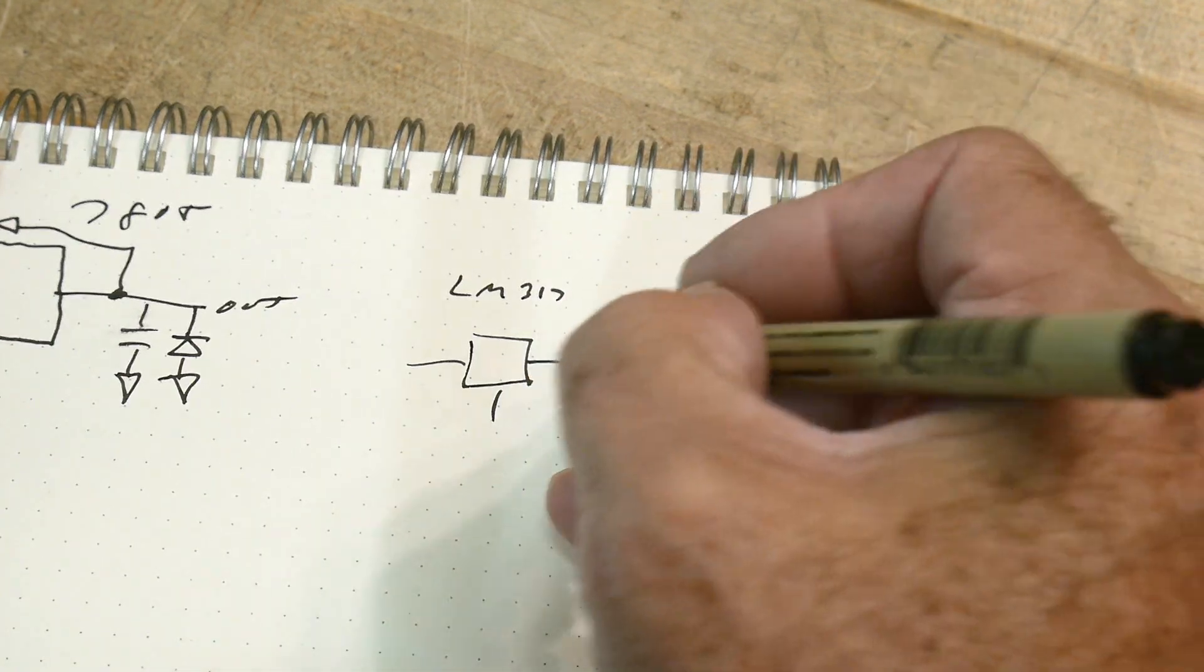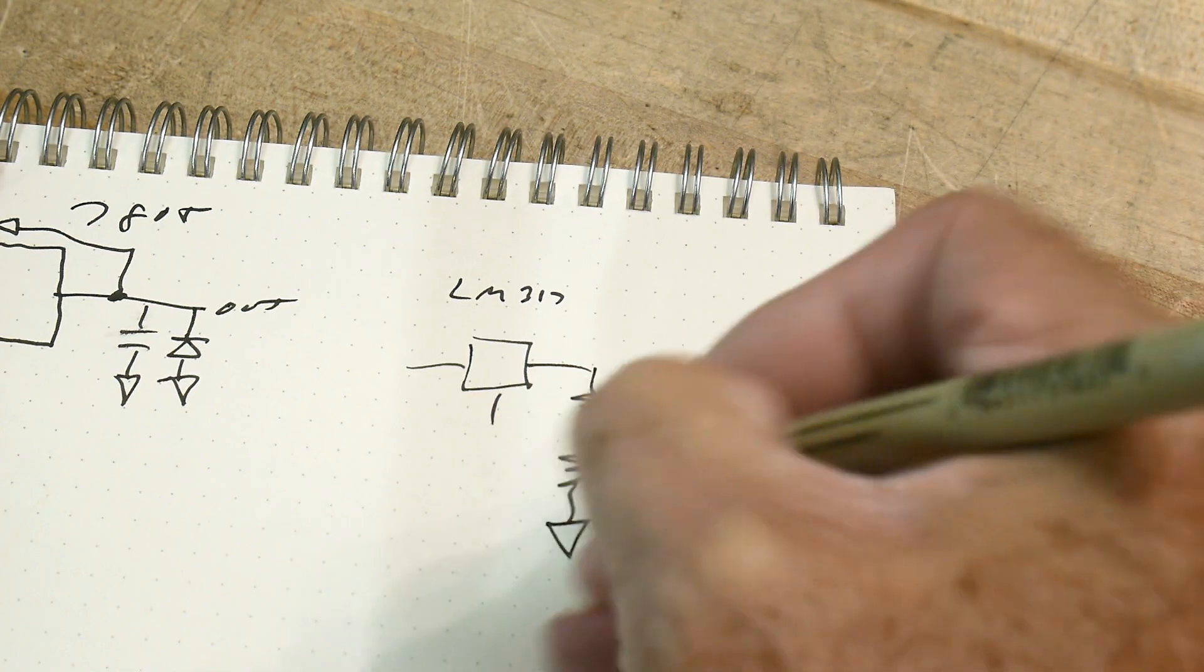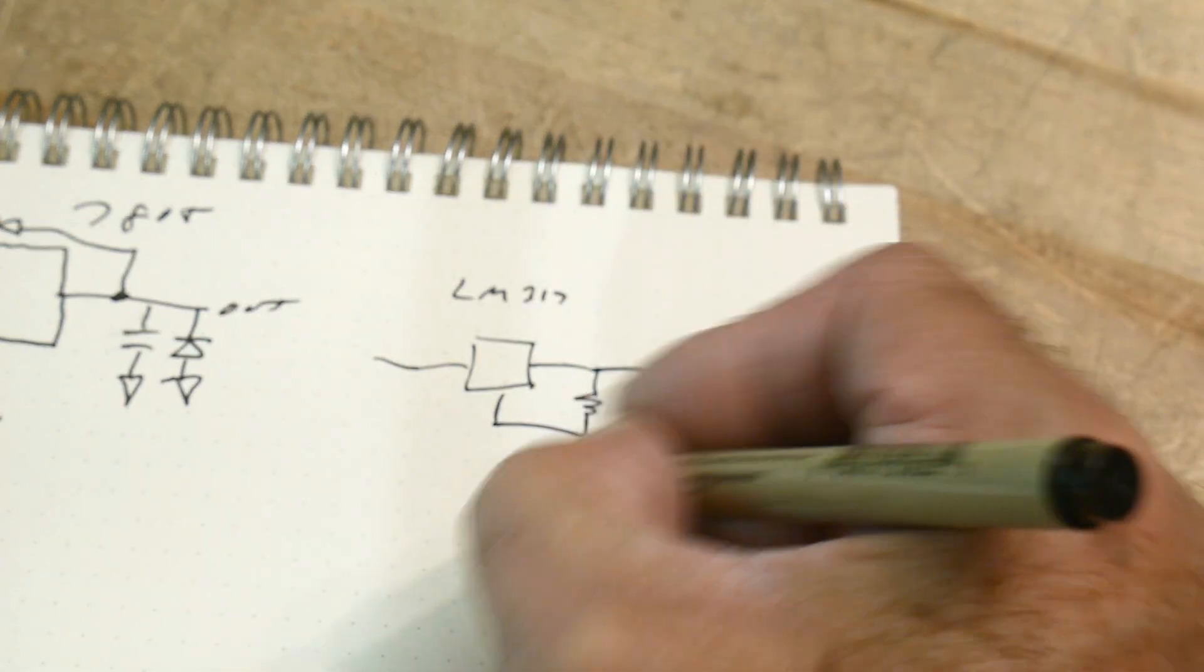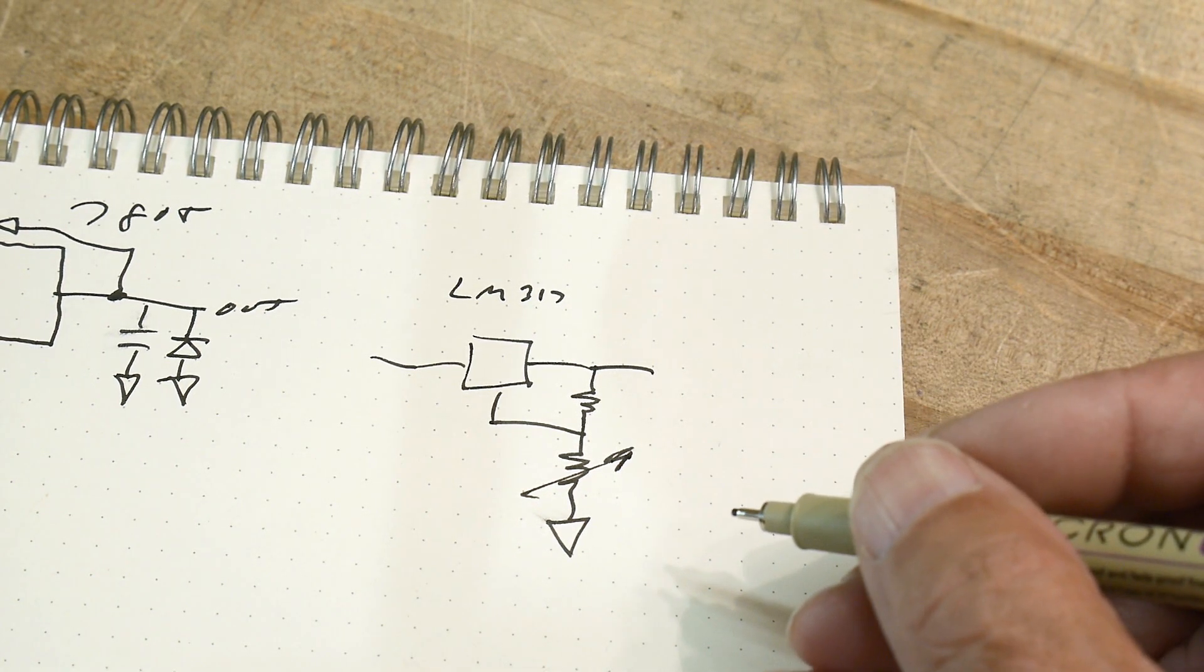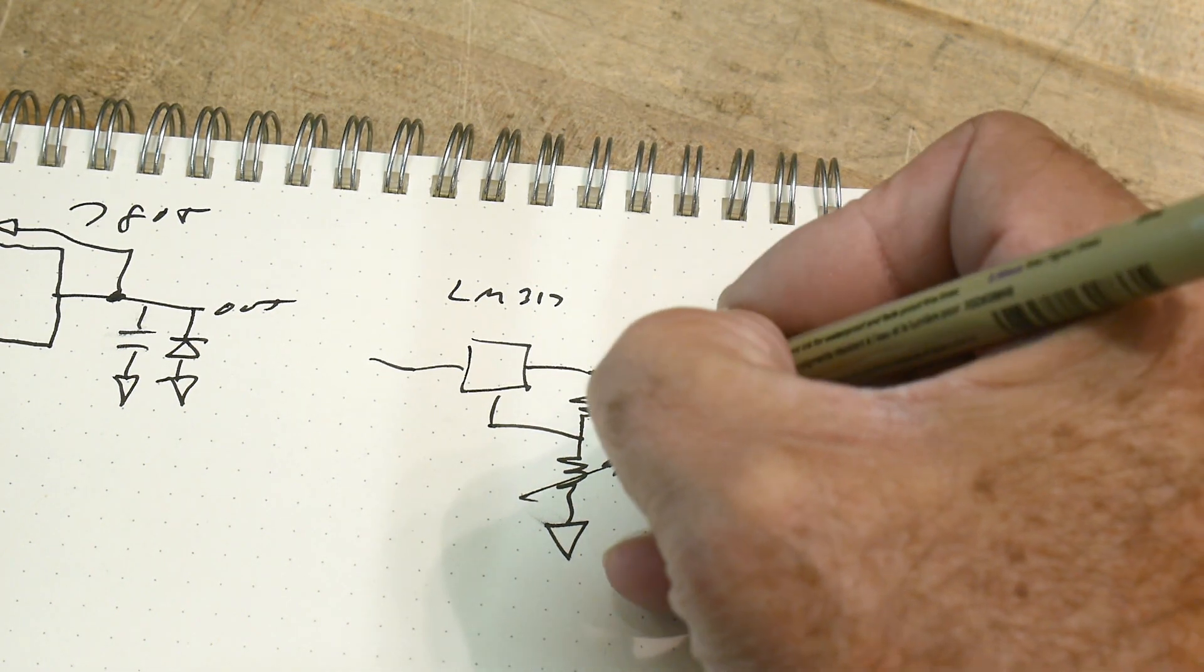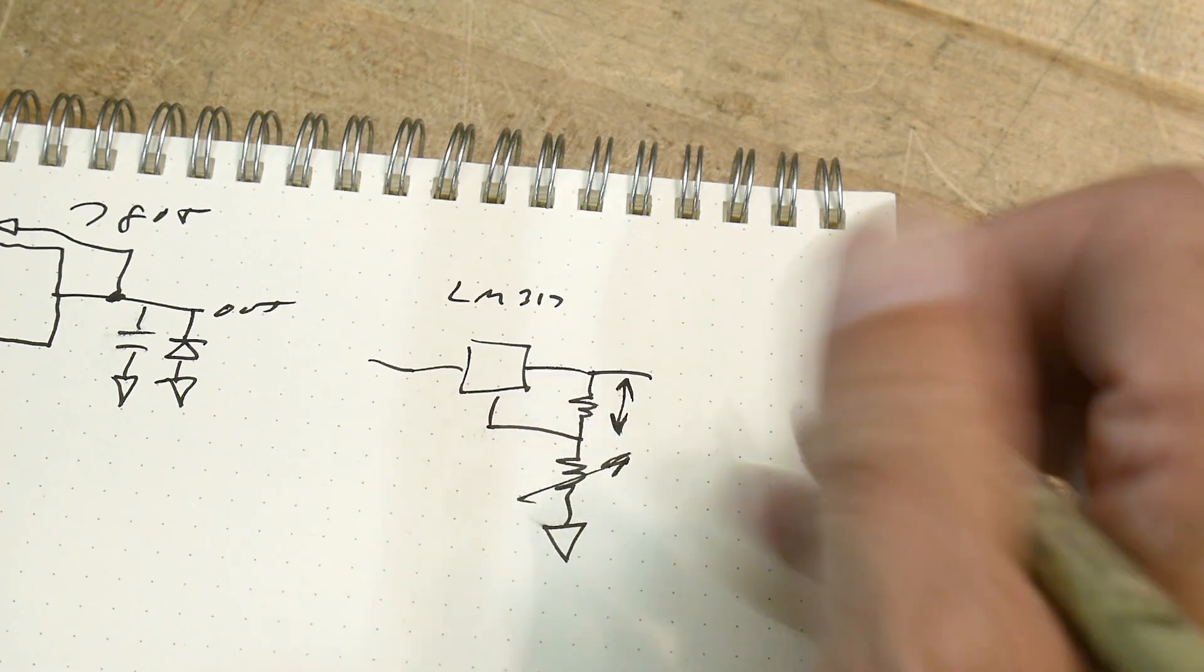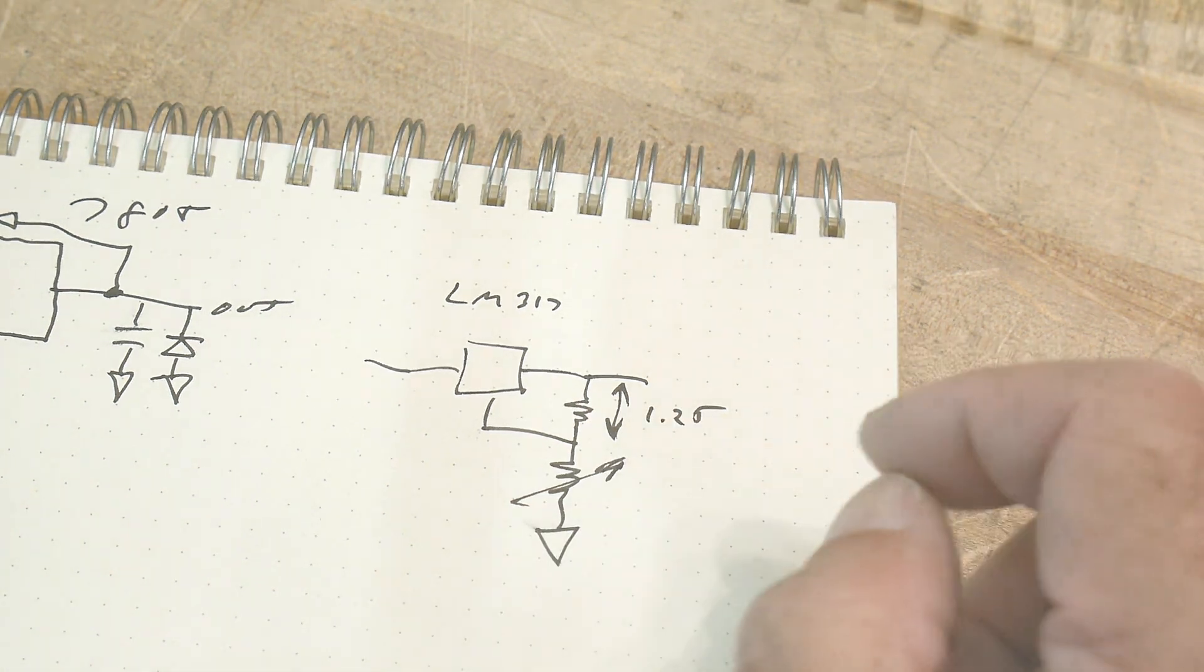And then you can do this to it. You can take the output and you can divide it. And it's adjustable. You can adjust this one. But really what you're doing is you're telling it, always make sure that the voltage between here and here, between the output and the adjust is always 1.25 volts. It always wants to see 1.25 volts there.